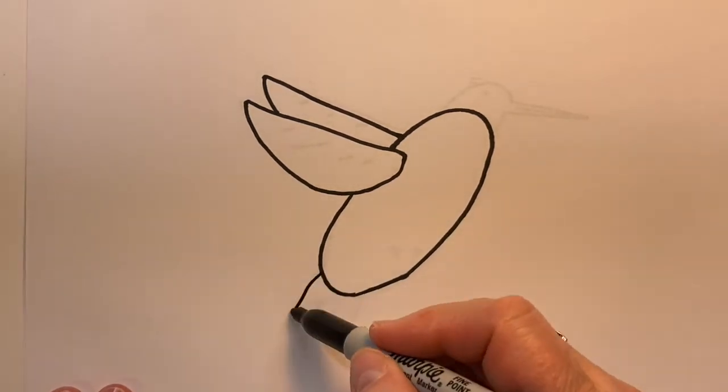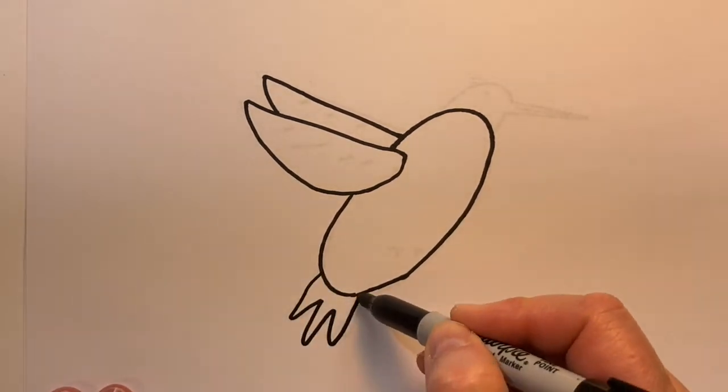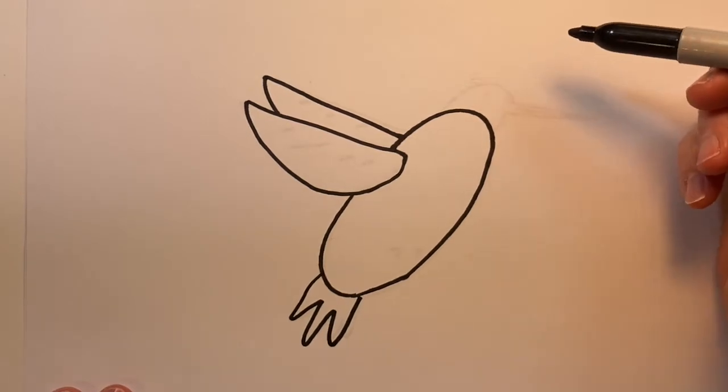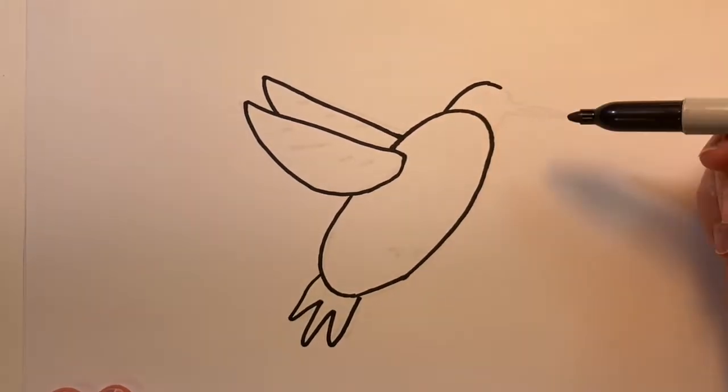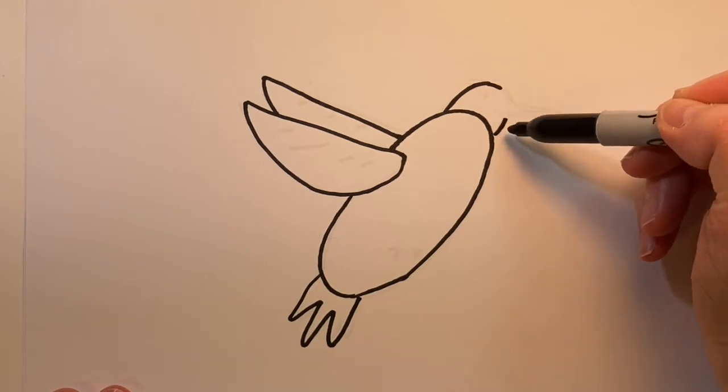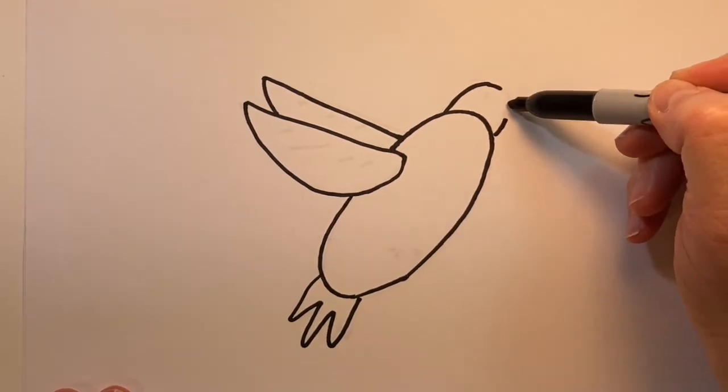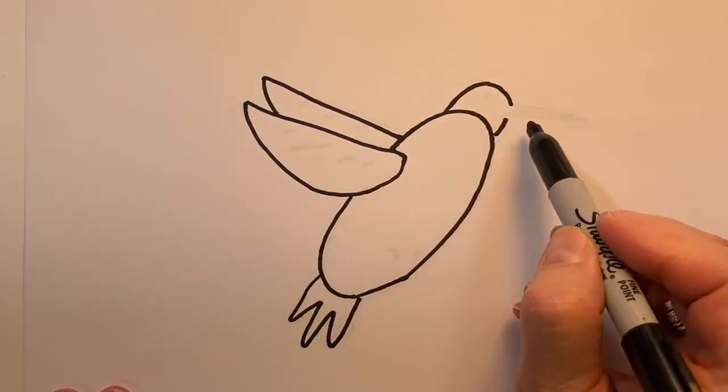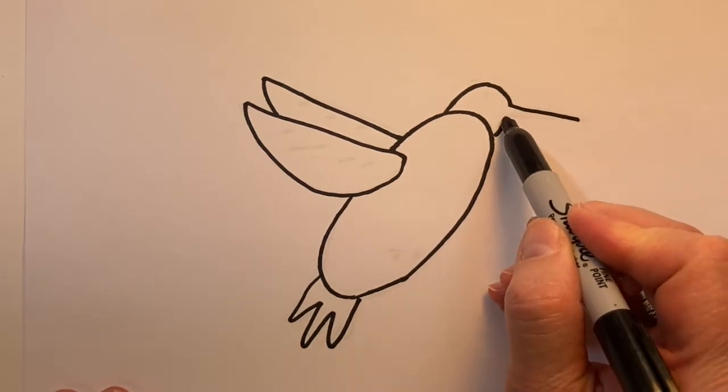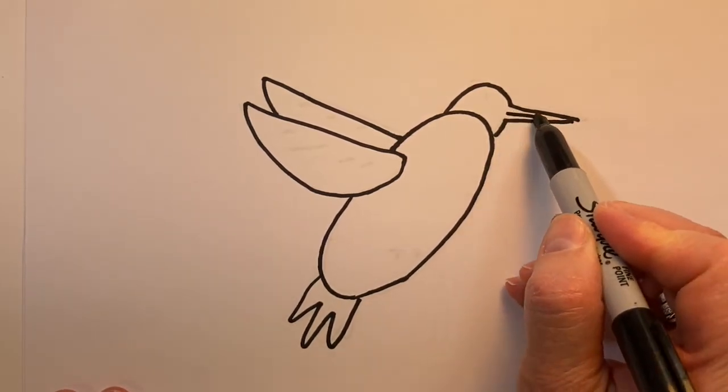And just some tail feathers. And the head of the hummingbird, we'll just have kind of a little sideways arch. Again, I'm going to leave a little gap, a little opening so I can create a sideways V for his beak.